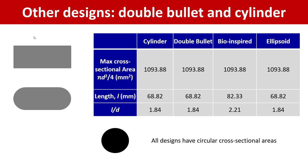Length was also the same except for the bio-inspired body which is larger to preserve dimensions or ratios of dimensions of the real body. This resulted in the ratio of length to diameter of 1.84 for cylinder, double bullet, and ellipsoid, and 2.21 for bio-inspired design, so approximately two for all of them.